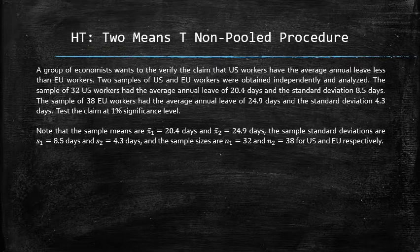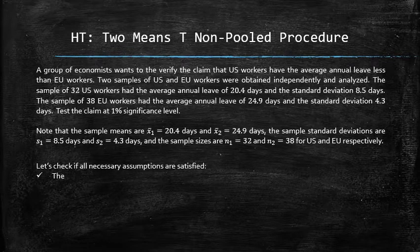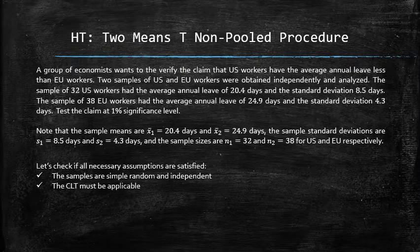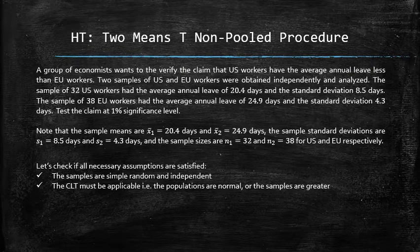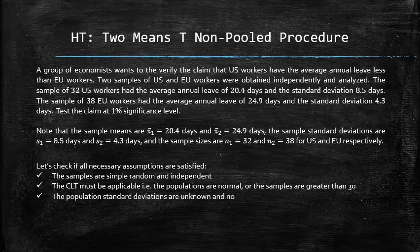Before we begin the two-means t non-pooled procedure, let's check if all necessary assumptions are satisfied. The samples must be assumed simple, random, and independent — if not, the results of the test are invalid. The Central Limit Theorem must be applicable: the populations are normal or the sample sizes are greater than 30. Also, the population standard deviations are unknown and not assumed equal.